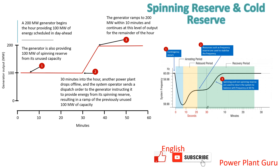Friends, in this topic, we have taken a case of spinning reserve. As the name suggests — reserve. We have taken the example of a 200 megawatt machine where it is right now running at 100 megawatt. So 100 megawatt is the generation and 200 megawatt is the capacity. That means there is 100 megawatt of spare capability available. That is called reserve — you have 100 megawatt capability to supply whenever there is a requirement.